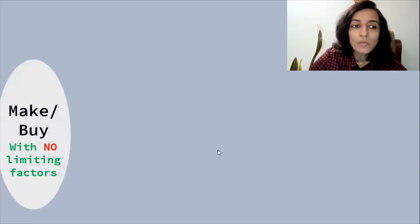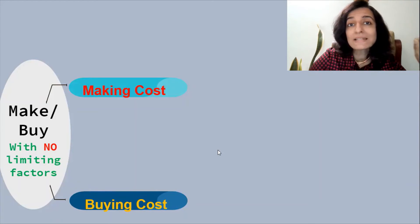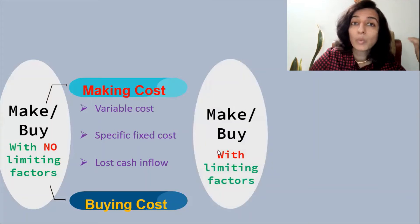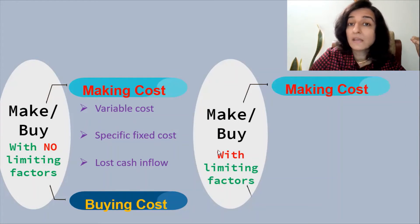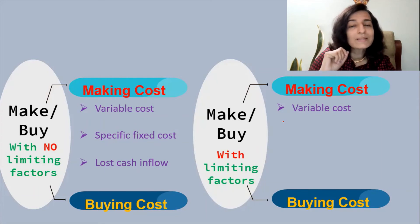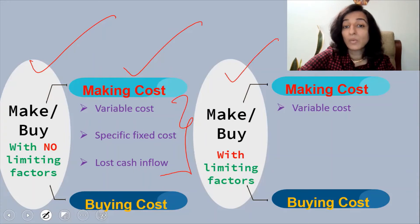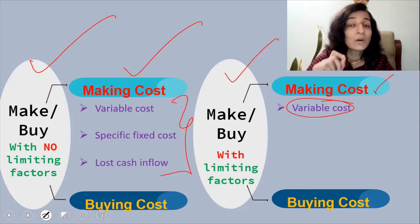A popular doubt that arises is the difference between make or buy with a limiting factor and make or buy with no limiting factors. In make or buy with no limiting factors, we compare the making cost with the buying cost, and the making cost comprises the variable cost, the specific fixed cost, and the lost cash inflow. But in make or buy with limiting factors, we compare making cost with buying cost, but the making cost includes only the variable cost. This is what creates confusion — in no limiting factors there are three elements, but with limiting factors there is only one: the variable cost.